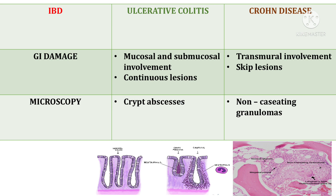Now let's talk about the GI damage. In ulcerative colitis, there is mucosal involvement and the type of lesions are continuous lesions — the whole of the colon is involved. When we talk about Crohn's disease, the involvement is transmural and there are skip lesions; it is not continuous like ulcerative colitis.